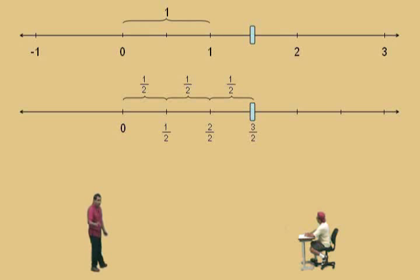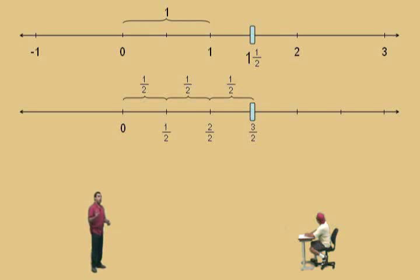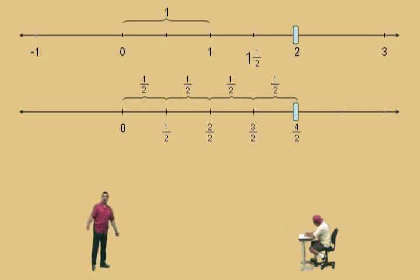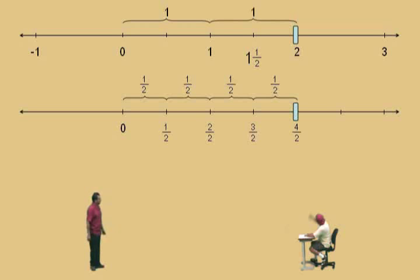Three halves — that's right. As a mixed number, that's one and one-half, which is the same as three halves. We'll talk about mixed numbers a little bit in this lecture as an introduction. We have three halves, which is one and one-half. If we add another half, how many halves do we have? Four halves, and four halves is the same as two, because four divided by two is two.